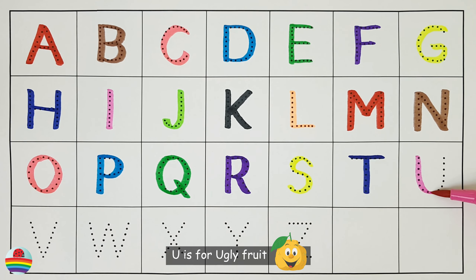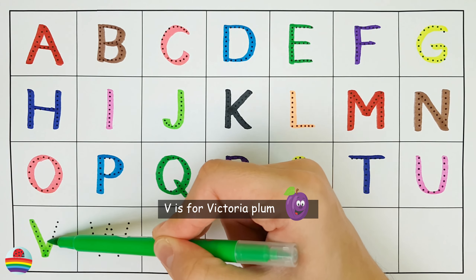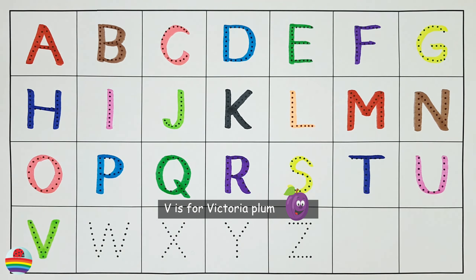U. U is for Ugly Fruit. V. V is for Victoria Plum.